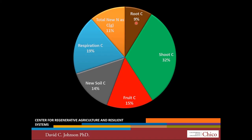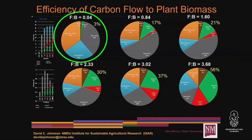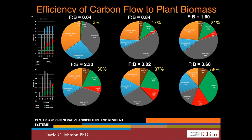Where does the carbon that a plant captures go? Photosynthate was partitioned into the root carbon, the shoot carbon, the fruit carbon. We also looked at new soil carbon over and above what we started with, the carbon that was respired, and the flow of carbon into nitrogen fixation. In a low fertility, low carbon, bacterial dominant soil, only 3% of the energy that plant captured and turned to photosynthates goes to the plant — 97% of it was pushed into the soil. As you move up, you see 17%, 21%, 30%, all the way up to 56% going into the root, shoot, and fruit of the plant. We're right here in agriculture — low carbon, bacterial dominant — at about 11% efficiency. According to this, we should be able to increase the productivity of these soils five times.